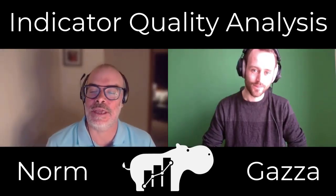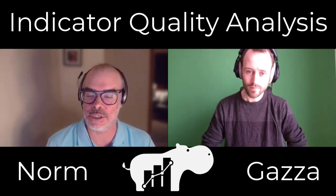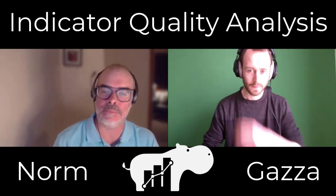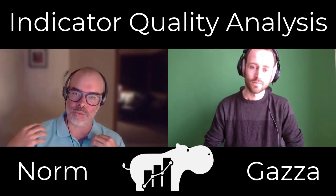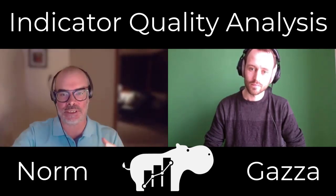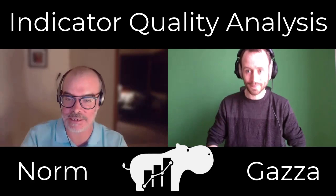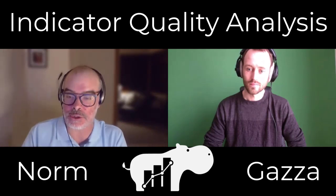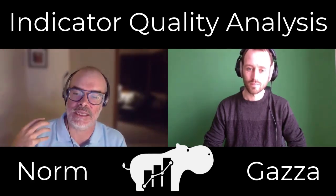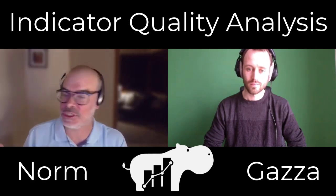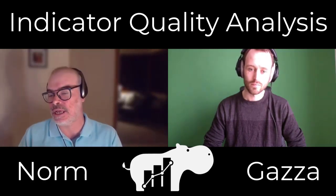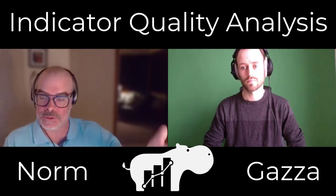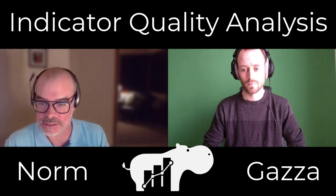Hello everybody, I'm here with Hippo Gatz and he is going to be telling us about the indicator quality analysis that he's been doing. So basically in SQX, when we do a run, SQX just grabs an indicator and slots it together with other indicators to create millions of systems an hour that we then mine to find good ones. But one of the problems is we don't know which indicators SQX uses a lot, and which ones end up performing very well and go on to pass our robustness tests.